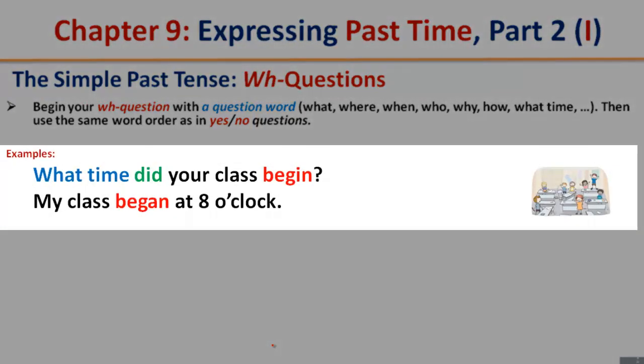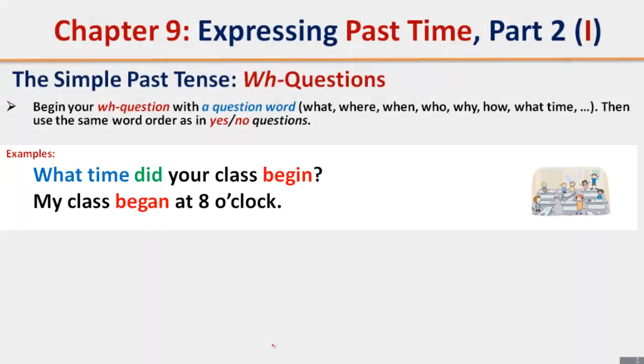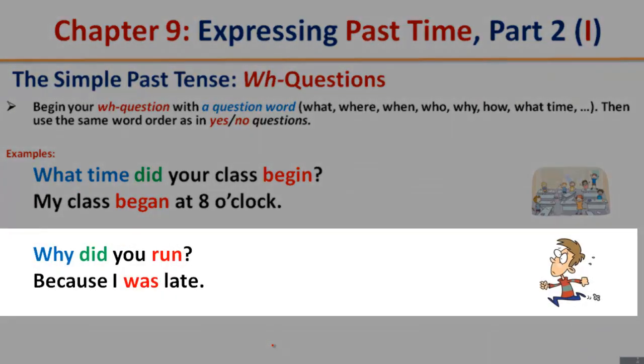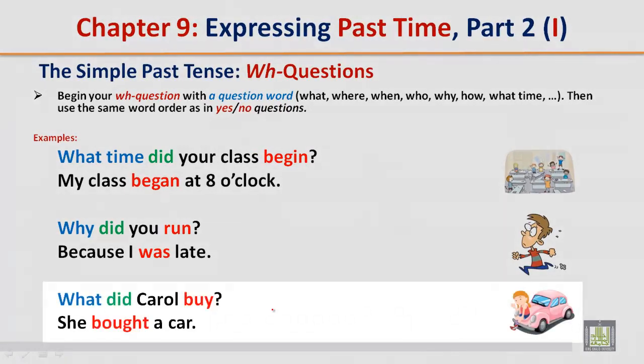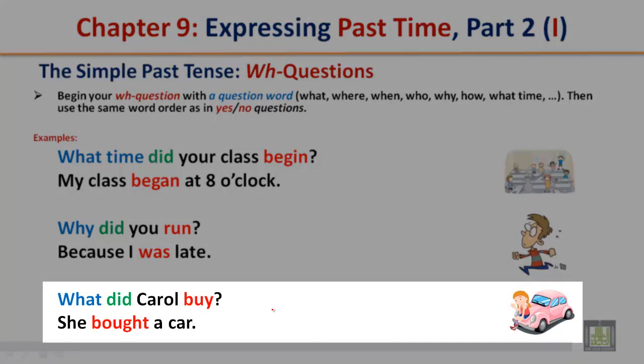What time did your class begin? My class began at 8 o'clock. Why did you run? Because I was late. What did Carol buy? She bought a car.